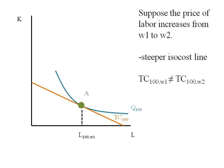It's important to note the total cost of producing 100 units of output at the wage of 1 is not going to be the same as the total cost of producing 100 units of output at the wage of 2. So the first thing I'm going to do is add a little W1 next to this total cost curve.